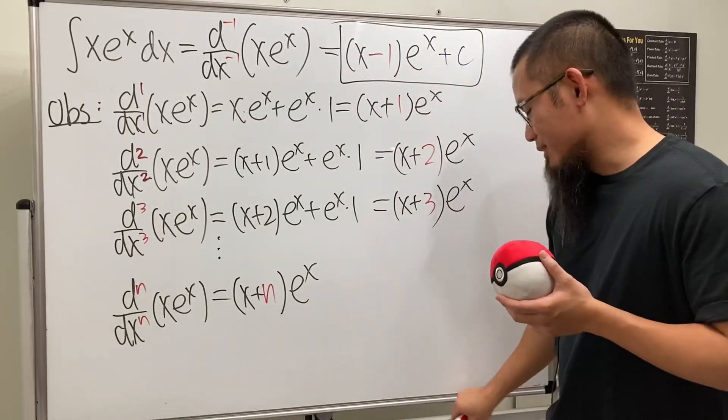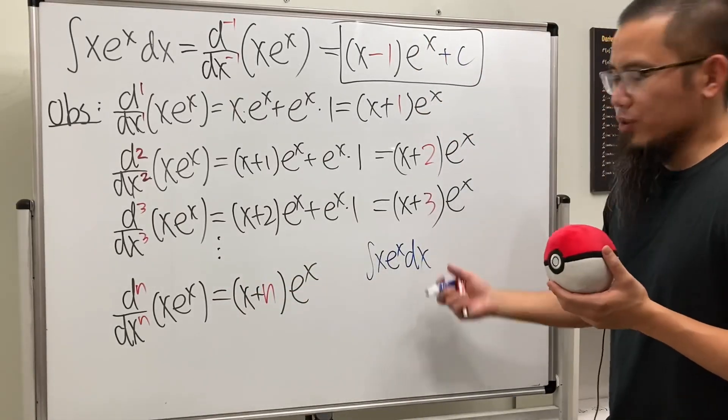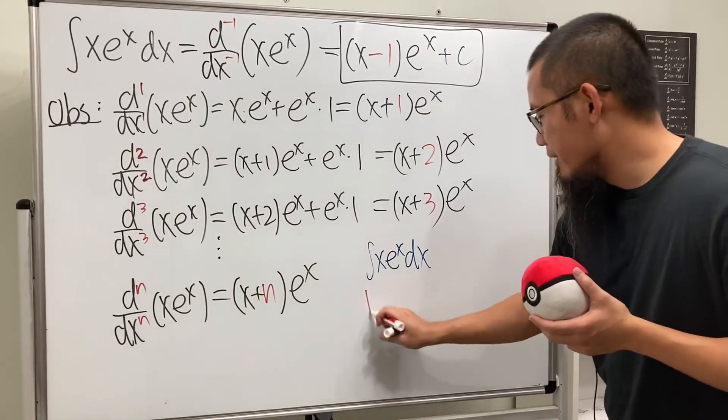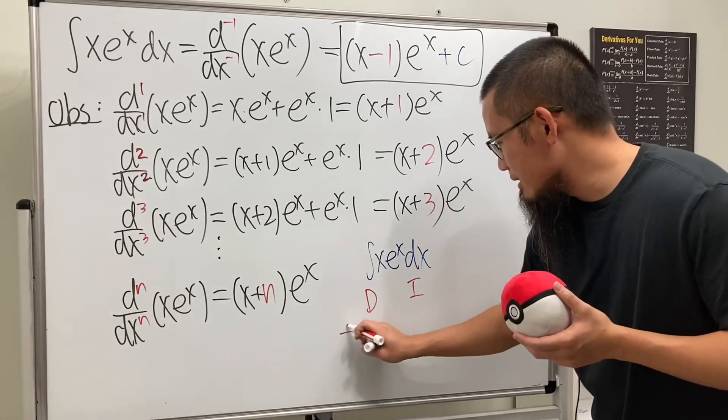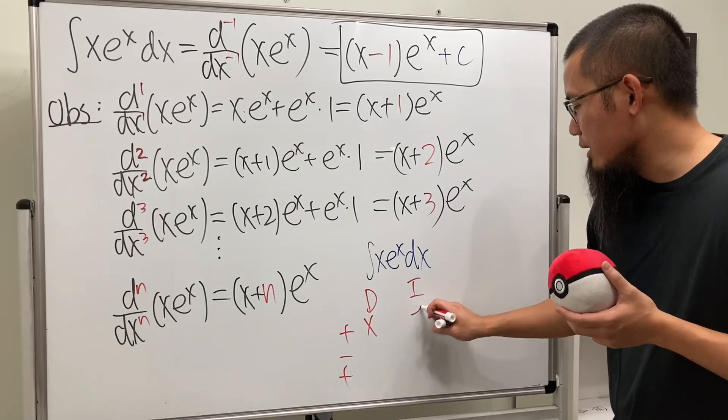Well, is this correct? Well, let's go ahead and double check. Right here, this is our integral. Let's, of course, use the DI method to check. So, D and also the I, plus, minus, plus. I will be differentiating x, and I will be integrating e^x.